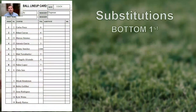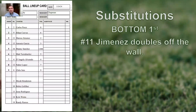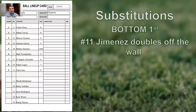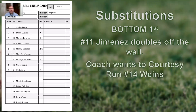Continuing on — bottom of the first inning, University is up to bat. Number 11, Jimenez doubles off the wall. Jimenez is in the three spot and he is the catcher. He just caught three outs in the top of the first, so he's no longer assumed to be the catcher — he is legitimately the catcher. Coach wants to courtesy run number 14, Wings, to come in for him. Is this legal? Absolutely.